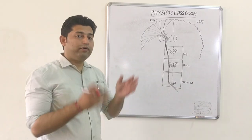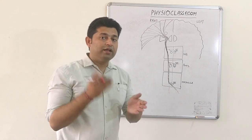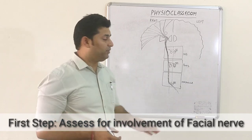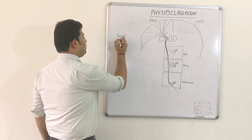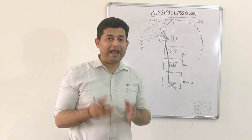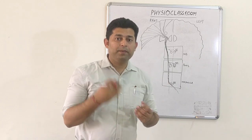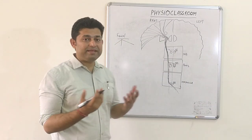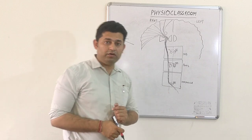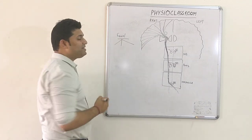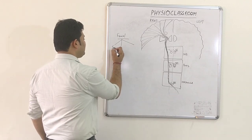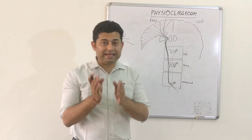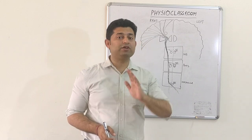Whenever we have a patient of sudden onset hemiparesis, the first step to determine the level of lesion is to assess the 7th cranial nerve — the facial nerve. You have to check for facial deviation, facial asymmetry, and loss of facial movements. There are three expected findings. Finding number one: the facial nerve is affected on the same side as the hemiparesis — for example, the patient has left hemiparesis and facial nerve involvement is also on the left side.